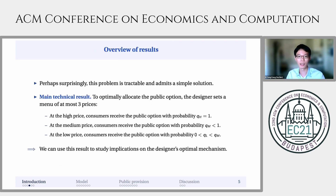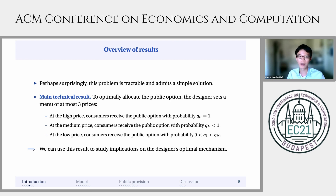Perhaps surprisingly, however, this fixed point problem is tractable and admits a simple solution. The main technical result of this paper is that the designer's optimal mechanism consists of at most three prices. At the high price, consumers receive the public option with certainty. At the medium price, consumers are rationed — meaning they receive the public option with some probability less than one. And at the low price, consumers receive the public option with even lower probability. This is a characterization result which we can use to study the designer's optimal mechanism in different economic settings.